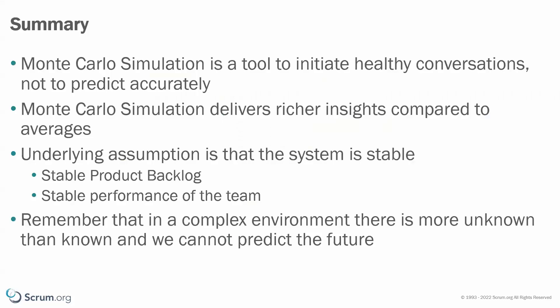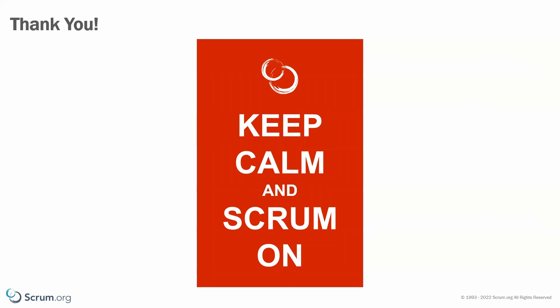So let's have a look at a summary. The primary purpose of using Monte Carlo simulations is to initiate healthy conversations, not predict the future. One of the benefits we showed in these examples is that we can move away from using averages, giving us richer insights. As we mentioned, we assumed a stable system; however, we more than often operate in a complex environment where there's more unknown than known and we can't predict the future. We can, however, inspect and adapt to the current situation based on insights we gather on an ongoing basis. Thank you for watching this video, we hope you found it helpful — keep calm and scrum on!